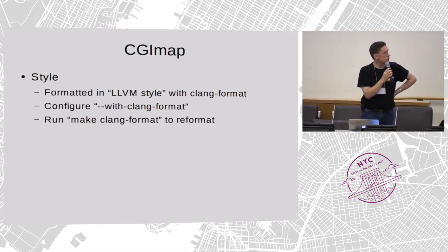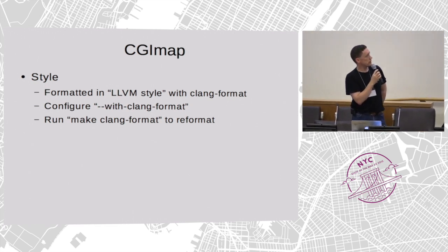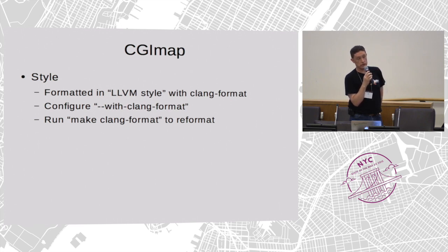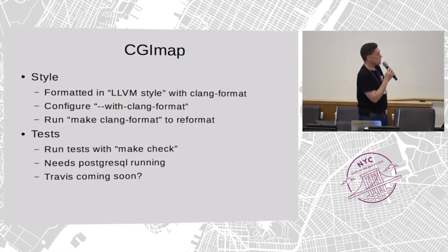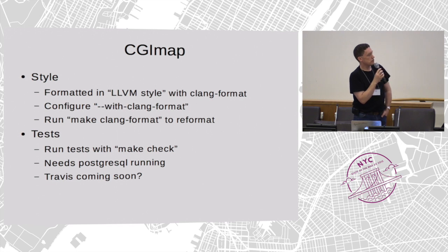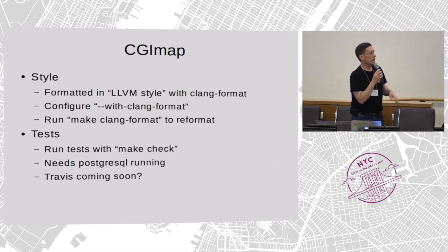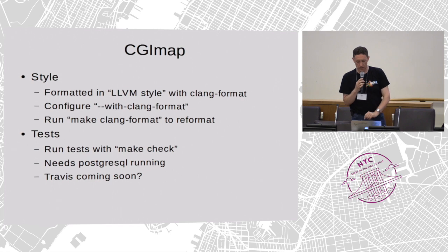As for the style of CGI map — it's all C++, formatted in the LLVM style. You can use Clang format; you'll have to run configure with that switch to get the Clang formatting, and then you can just run make. It does require Clang 3.6 at the moment, so you need to be reasonably up to date. It does have tests — you can run all those with make check, but you do need to have a Postgres server running for that to work. Travis integration is not quite there yet, but hopefully coming real soon.